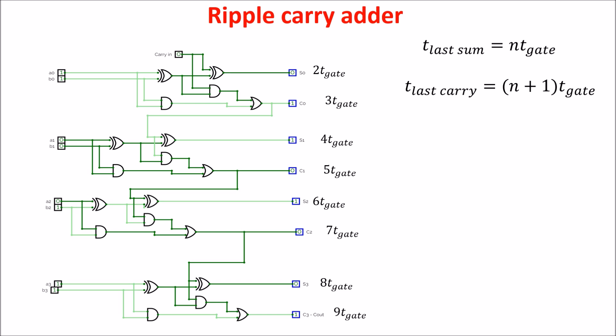So from here, you can realize better how the total delay is linked to the number of bits, via the carry propagation.